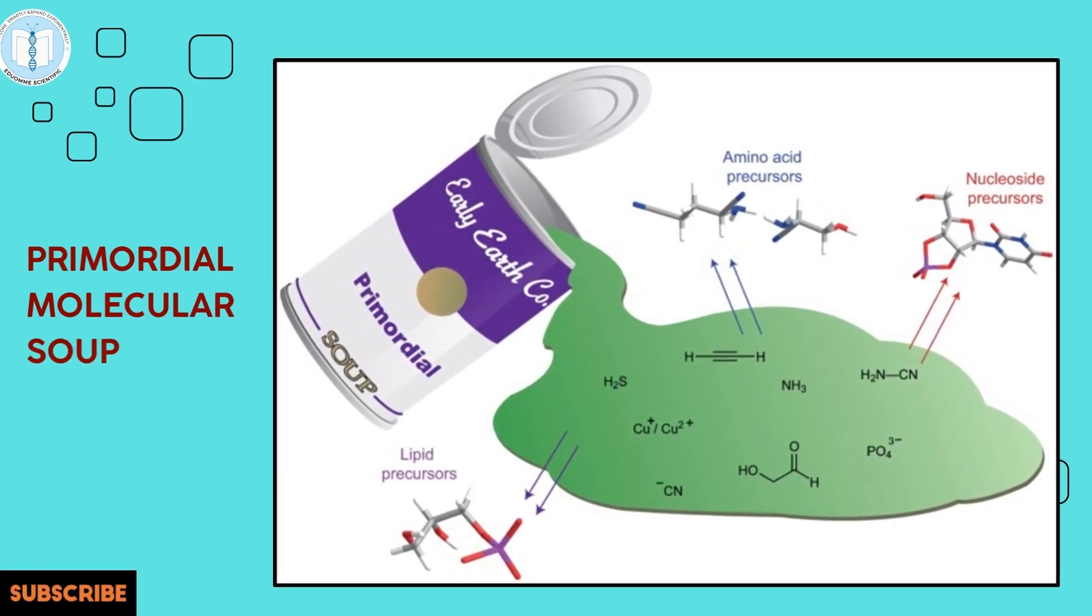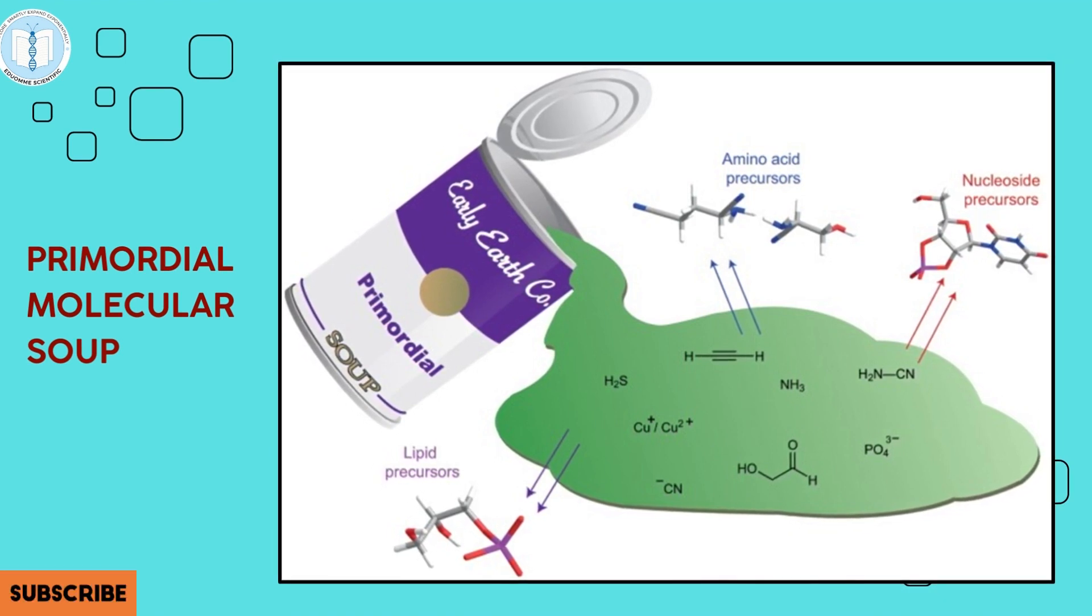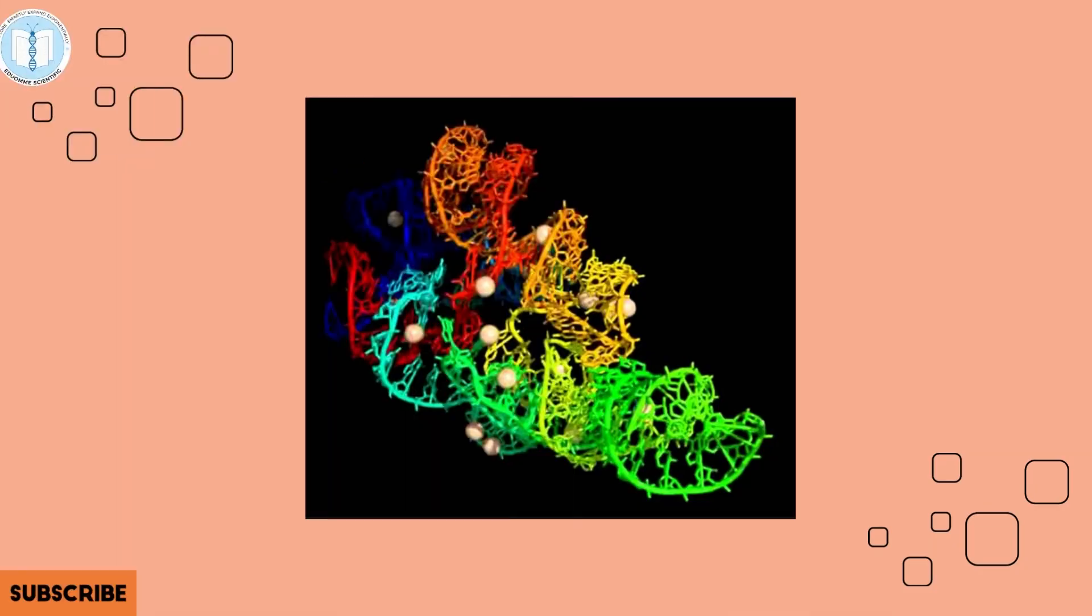The RNA world begins in the primordial soup, like many other theories on the origins of life. The primordial molecular soup filled with free-floating nucleotides, the constituents of DNA and RNA, as a result of spontaneous chemical reactions. The first RNA strands were formed from these floating nucleotides. However, they were soon broken down again and then rebuilt in a cycle.